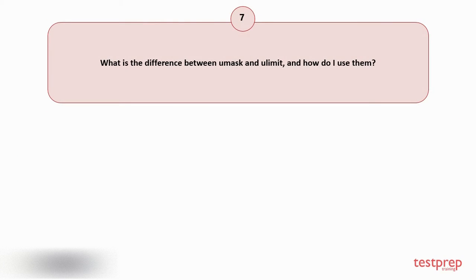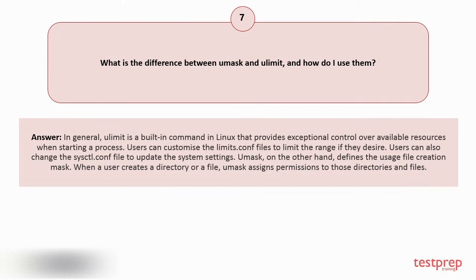Question number 7: What is the difference between Umask and Ulimit, and how do I use them? In general, Ulimit is a built-in command in Linux that provides exceptional control over available resources when starting a process. Users can customize the limits.conf files to limit the range if they desire. Users can also change the sysctl.conf file to update the system settings. Umask, on the other hand, defines the file creation mask. When a user creates a directory or a file, Umask assigns permissions to those directories and files.